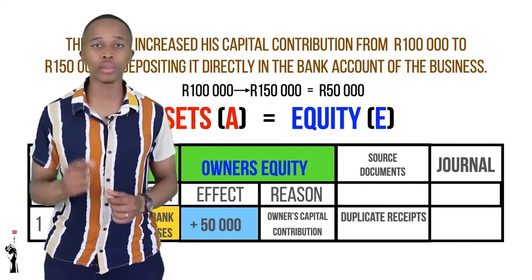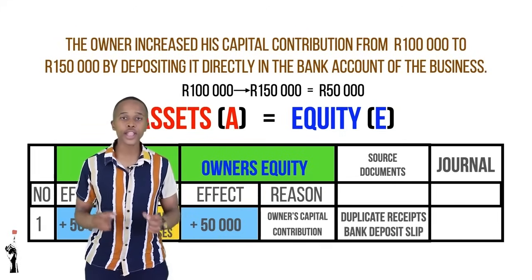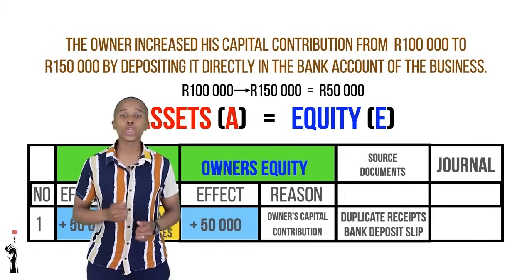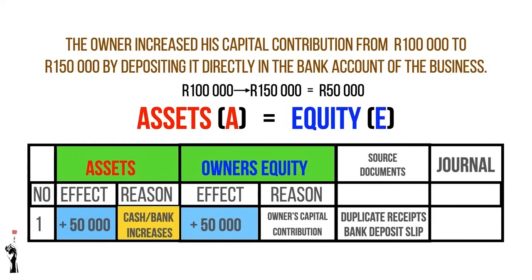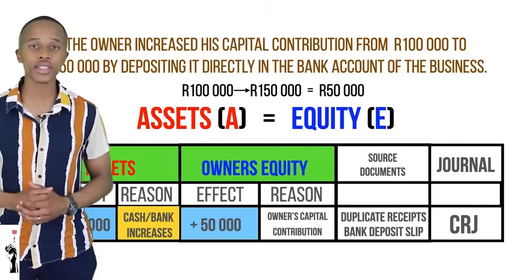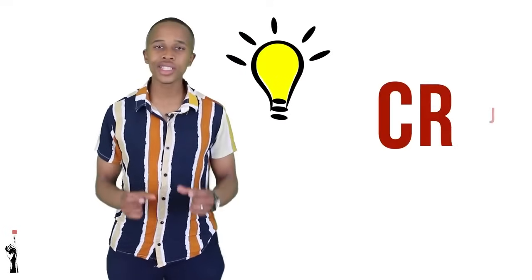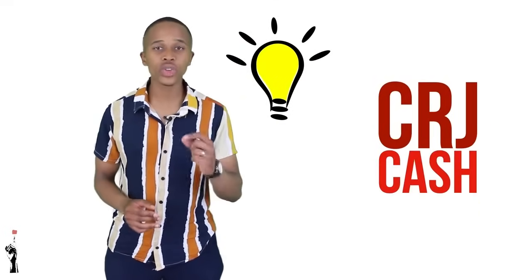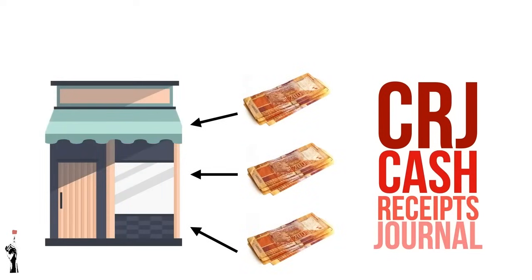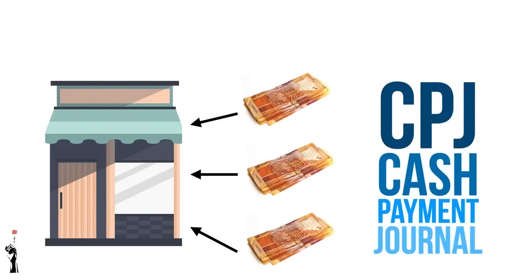The source document in this example is a duplicate receipt — the owner got the receipt, not the business. It would also be correct to write bank deposit slip, which is when the business deposits the money into the bank and the bank issues the source document. The journal is the CRJ — the cash receipts journal — because the business receives the money. The CRJ is money coming into the business; the CPJ, the cash payments journal, is money leaving the business.